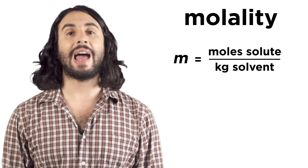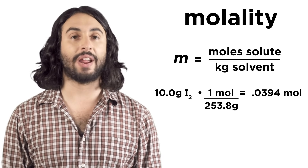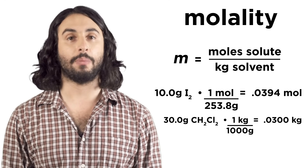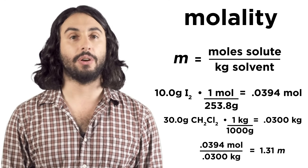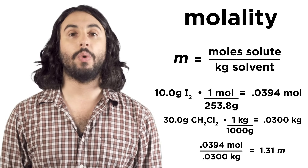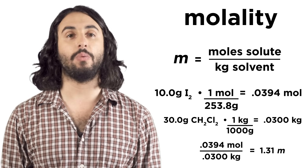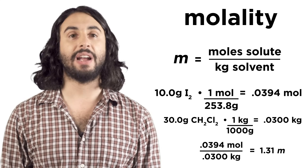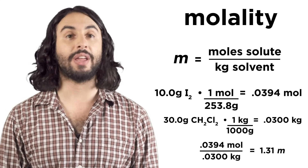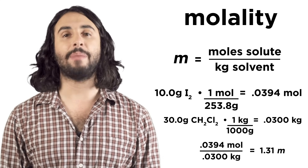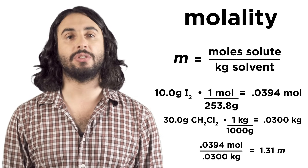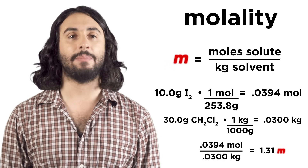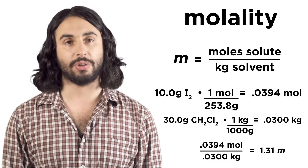So the molality of a solution of 10 grams of iodine in 30 grams of dichloromethane would be calculated as follows — we would call this a 1.31 molal solution, like we might say molar when discussing molarity. While we use an uppercase M to denote molarity, we use a lowercase m in italics to denote molality.